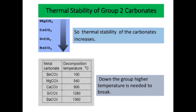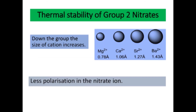Thermal stability of the carbonates increases down the group — a higher temperature is needed to break them. Beryllium carbonate needs only 100°C to decompose, but calcium carbonate needs 900°C, because the calcium ion is larger and so there is less polarization. Beryllium carbonate and magnesium carbonate have greater polarization and are easier to break.